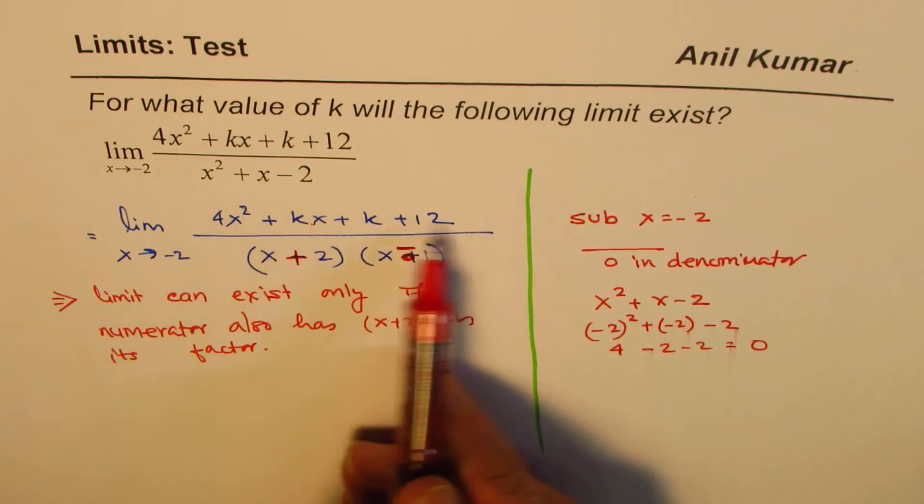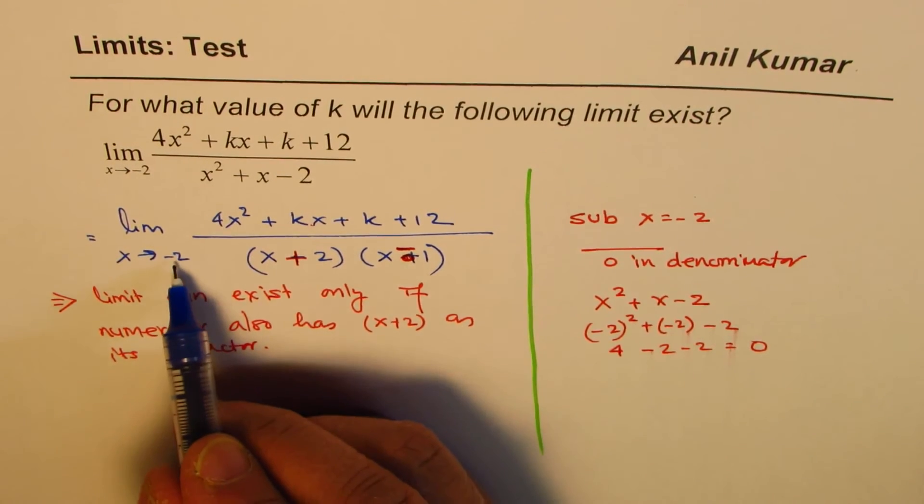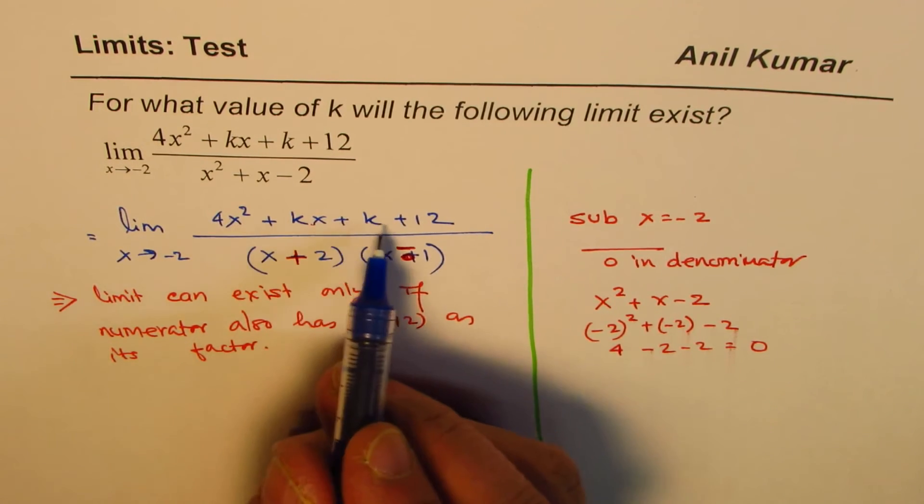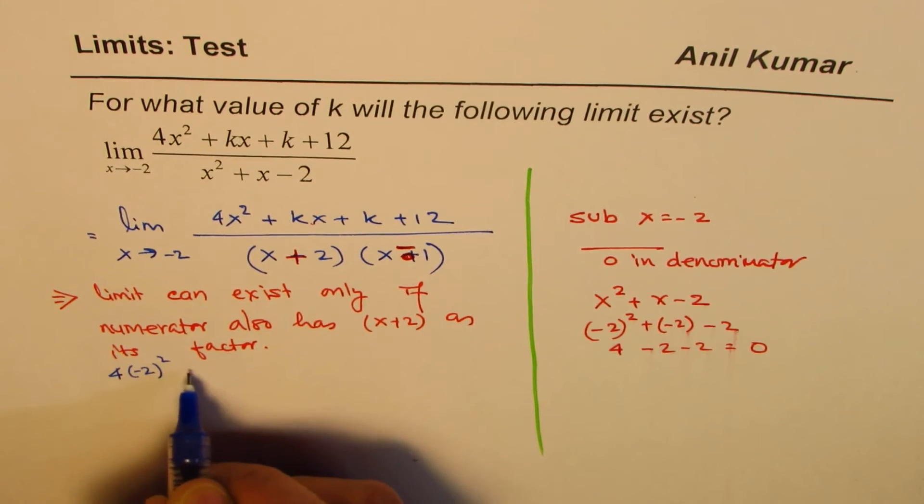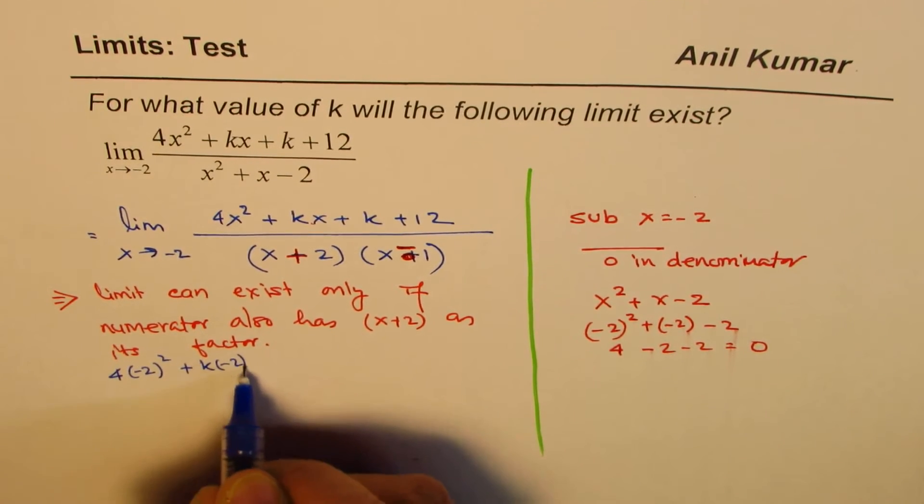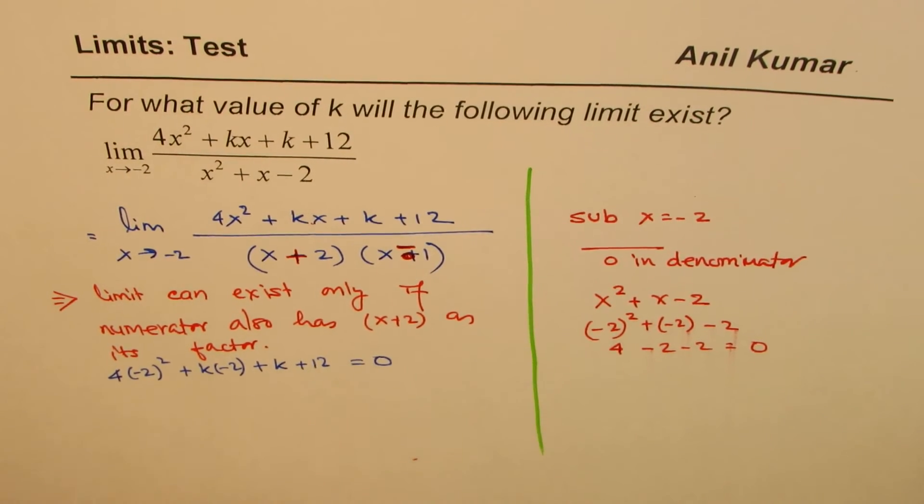That will help us to solve this question. So now we can solve this question by substituting minus 2 in the numerator and equating it to 0. So what we get here is 4 times minus 2 squared plus k times minus 2 plus k plus 12 should be equal to 0.